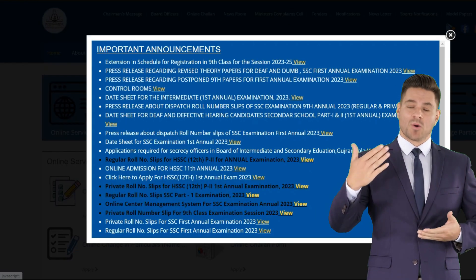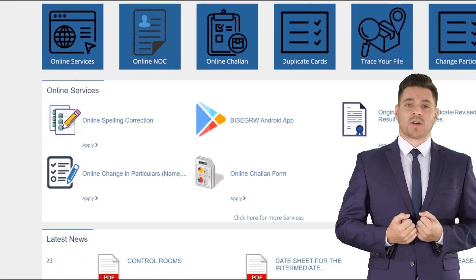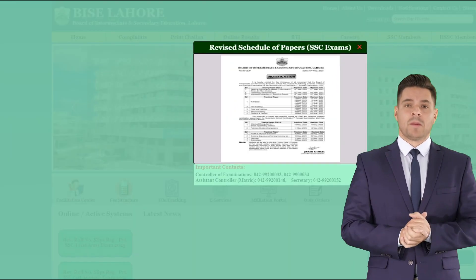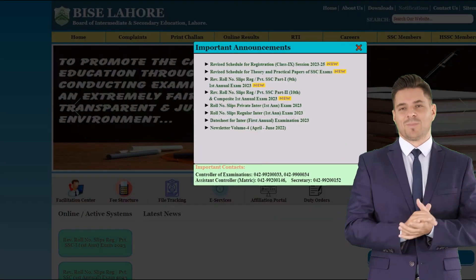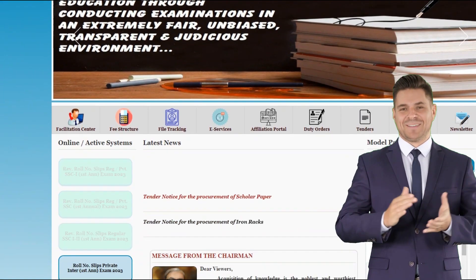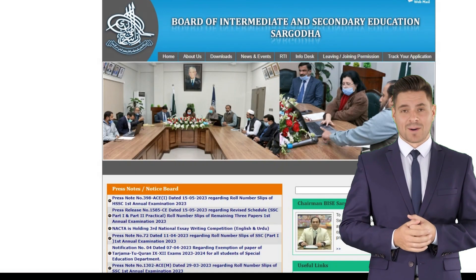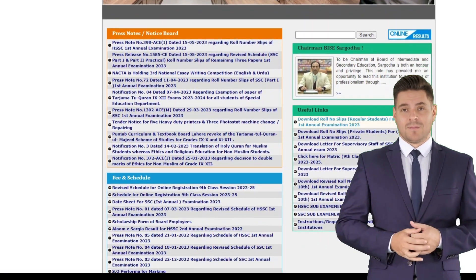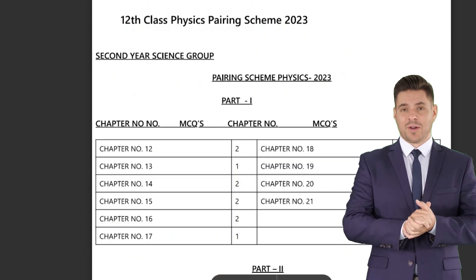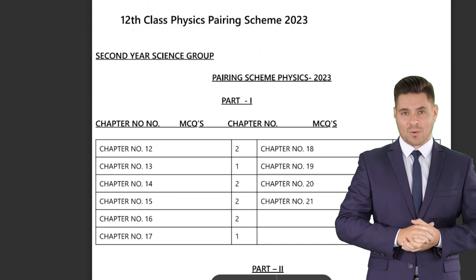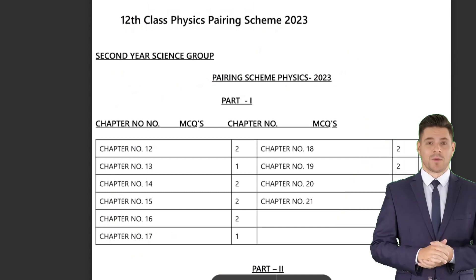This includes Lahore board, Multan board, Gujranwala board, Sahiwal board, Sargodha board, DG Khan board, Faisalabad board, and BISE Jammu Kashmir. Download second year paper scheme 2023 or read it online. The aim of the pairing scheme or paper scheme is to support students.